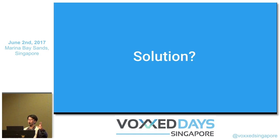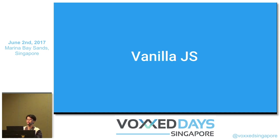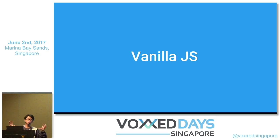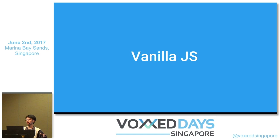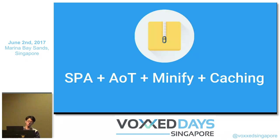What's the solution? Let's use Vanilla.js — go back to pure JavaScript, ECMAScript 2017 standards. It sounds like a great idea for small projects, but when you work in a big company or team you need some form of structure. You can't write everything in vanilla JS — it has less structure and it's going to become a mess. The more reasonable answer is to have a single page app, ahead-of-time compilation, minification, and caching.